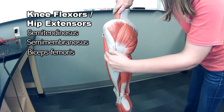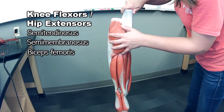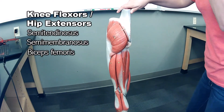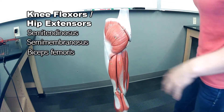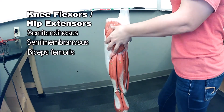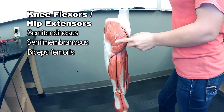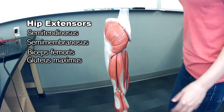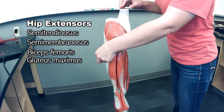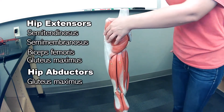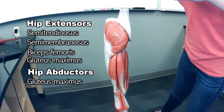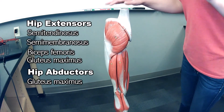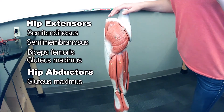But we're not done because we didn't cover the glutes yet. This big one is the gluteus maximus. The gluteus maximus can abduct at the hip and also extend.